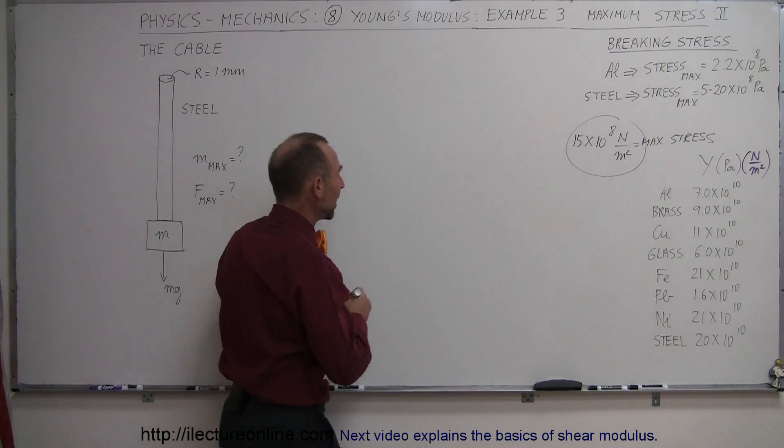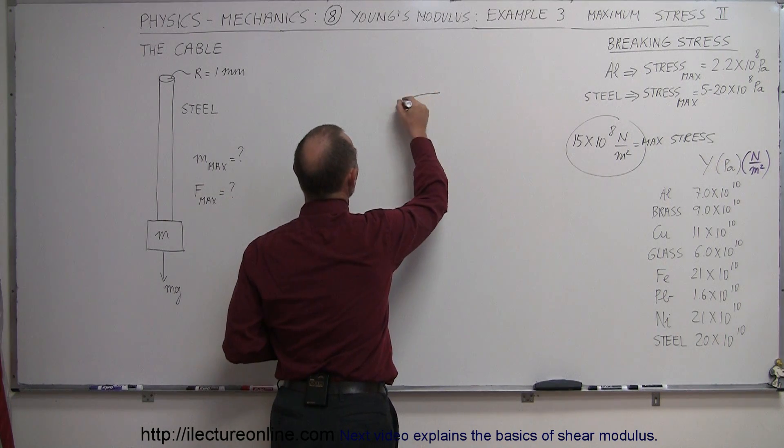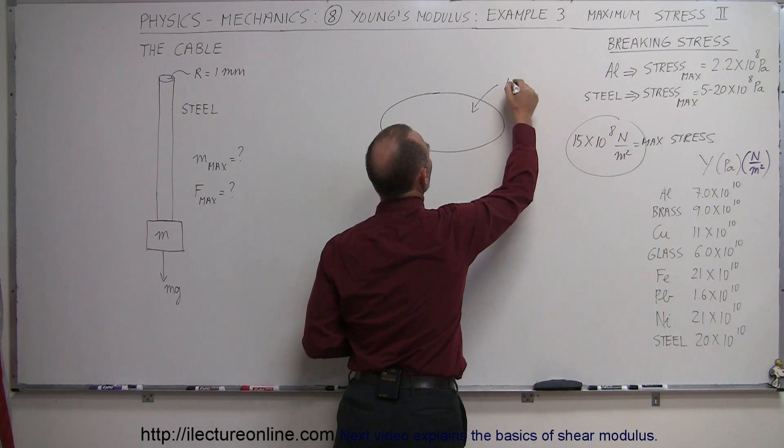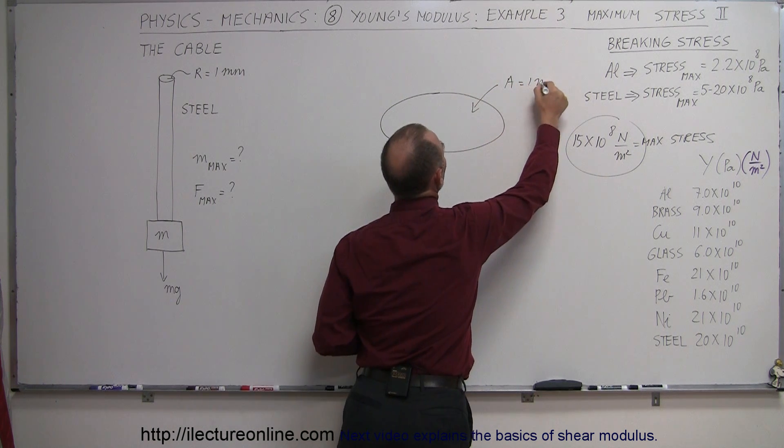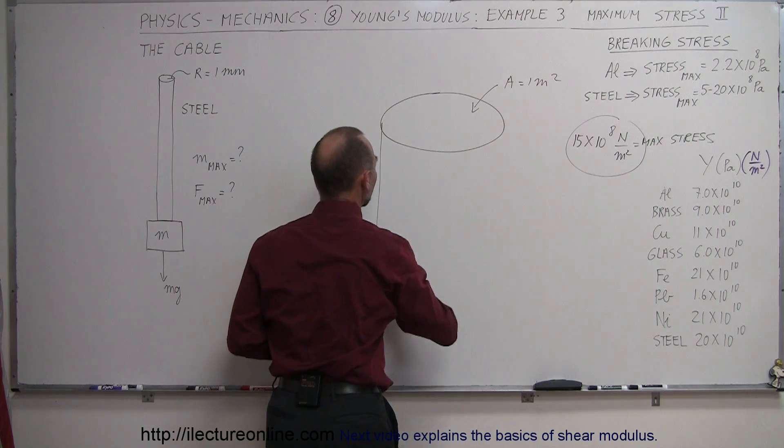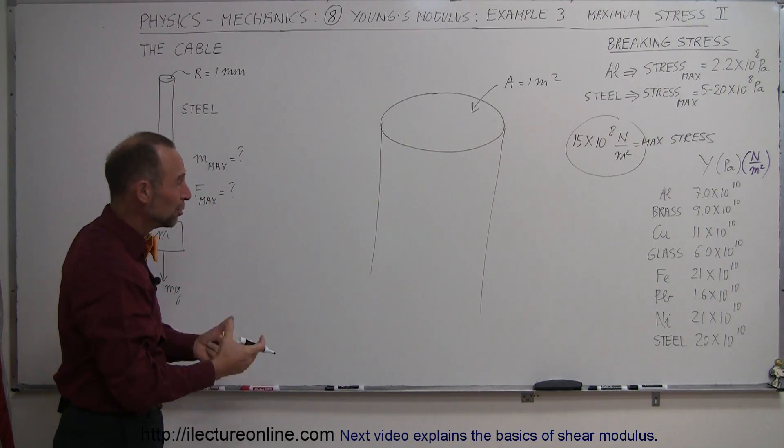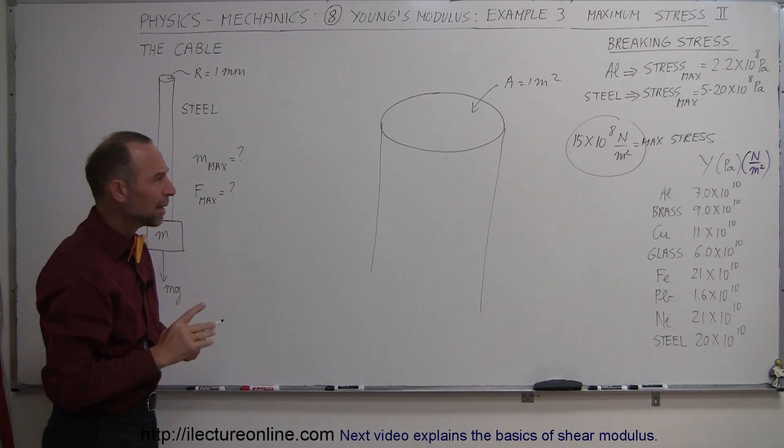Well, what that means is, let's say we had a really big cable. Let's say we had a really huge cable in such a way that the cross-sectional area was equal to 1 meter squared. Now, of course, that would be a humongous cable. Typically, we don't make them like that because that would be much too difficult to maneuver.